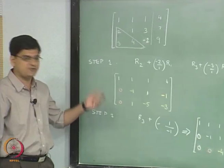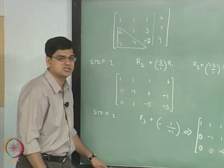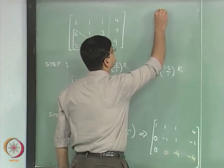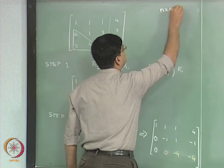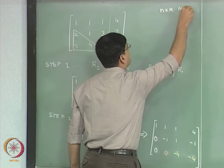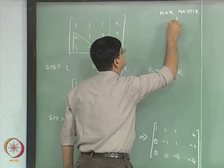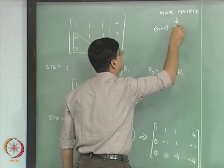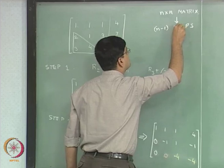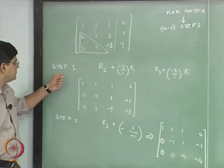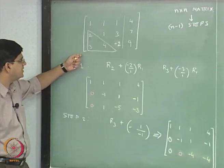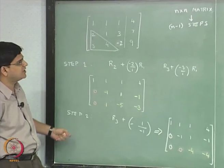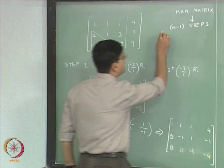A few things that we had noted in the previous lecture as well is that Gauss elimination for an n by n matrix, it has n minus 1 steps. In this case, it is a 3 by 3 matrix and in a 3 by 3 matrix, we had 2 steps, 3 minus 1 equal to 2 steps.